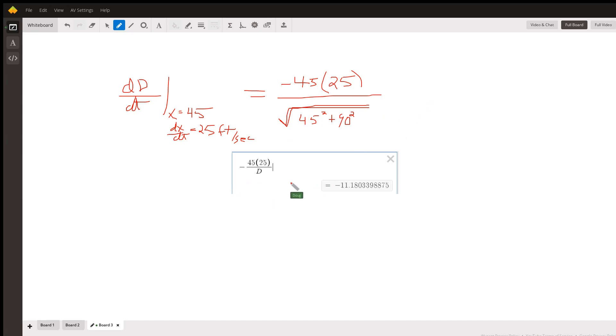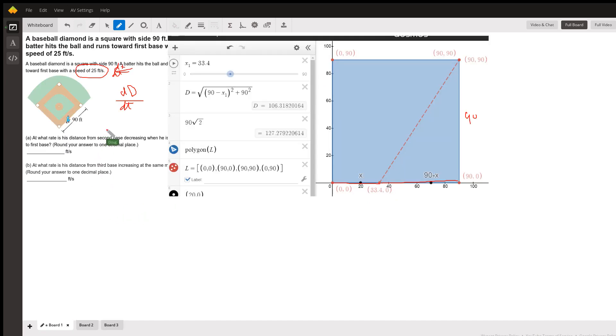And I did the calculation on Desmos. That should be your answer. The rate at which the distance from the runner to second base is changing is negative 11.2 feet per second. Okay, that's the answer to part a.